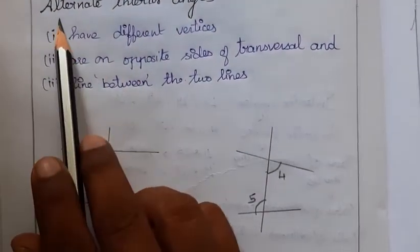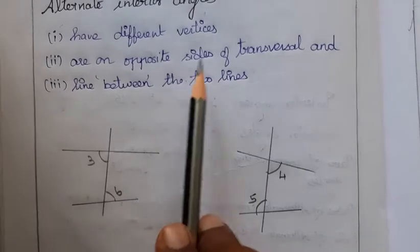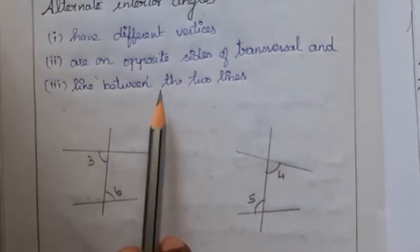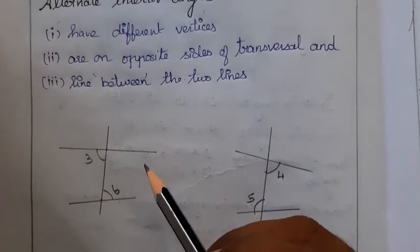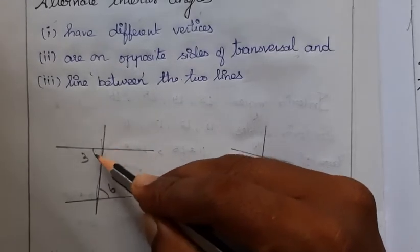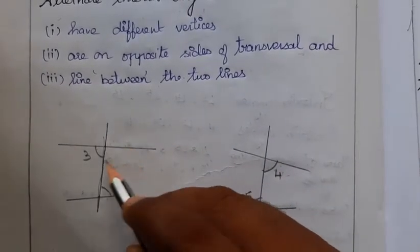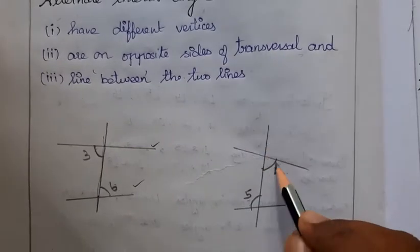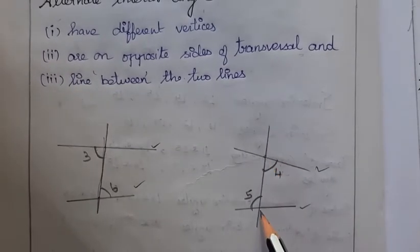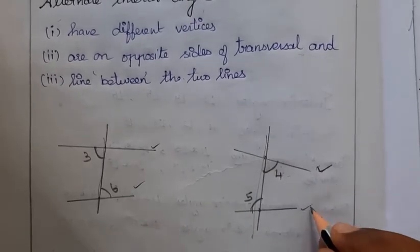For alternate interior angles, they also have different vertices but are on opposite sides of the transversal and lie between the two lines. You can see 3 and 6 are on opposite sides of the transversal, and 4 and 5 are also on opposite sides — both angles are between the two lines.